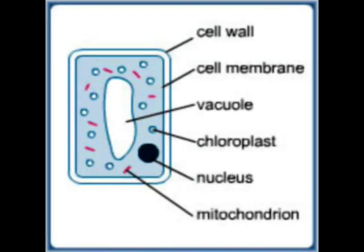In contrast, a plant cell consists of a cell wall, a cell membrane, a nucleus, chloroplasts, cytoplasm, and sap vacuole.